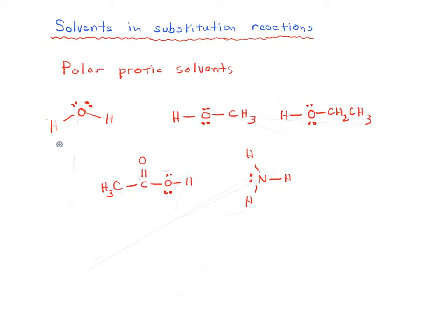Here I've drawn a list of polar protic solvents that you'll commonly encounter. The most important thing to note for each of these solvents is to think about oxygen and hydrogen and the different electronegativities between them. Oxygen has a pretty high electronegativity of about 3.5, while hydrogen has an electronegativity of 2.2. We think of electronegativity as greed for electrons — it pulls electrons towards itself.